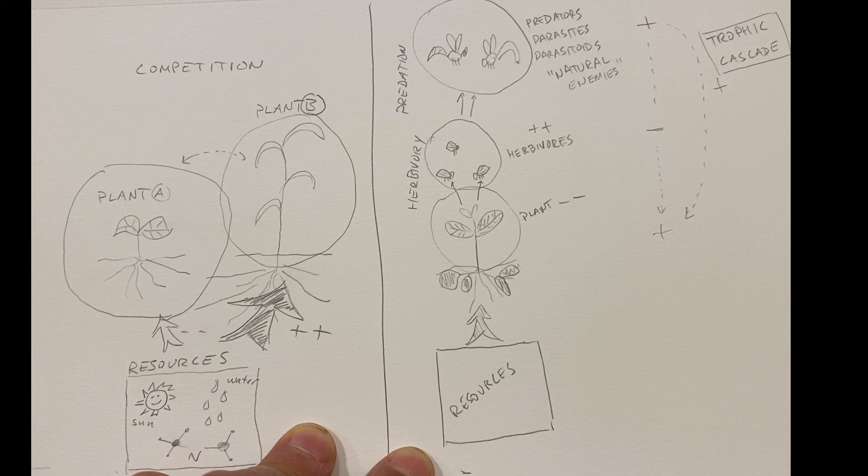And this is a very fundamental concept in a lot of ecology, but also in agriculture, because the action of those natural enemies in your system is what's going to keep the population of those things that we refer to as pests down and your yield and your productivity up.